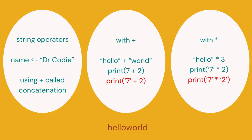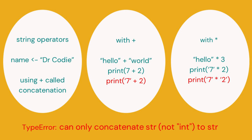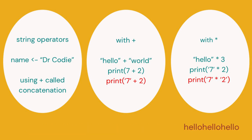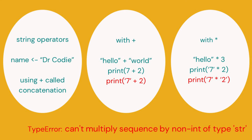If we print 7 plus 2, the plus here is addition as in maths — giving us 9. But if we have the string '7' — not the number — plus 2, that's shown in red because it would give us an error: you can't add a number to a string. With multiplication, we can multiply strings — 'hello' multiplied by 3 gives 'hellohellohello'. Multiplying the string '7' by 2 gives '77', but you can't multiply two strings together — that gives an error.